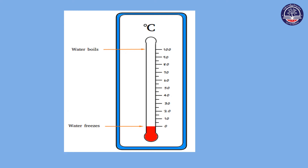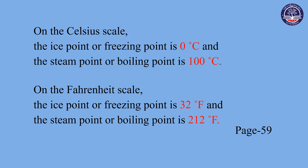If you have a CGS scale, you can calibrate it and use the CGS scale. In the CGS scale, you can see that it is 0.5 degrees. If you want to make a difference, you can see the difference between the two degrees Fahrenheit.